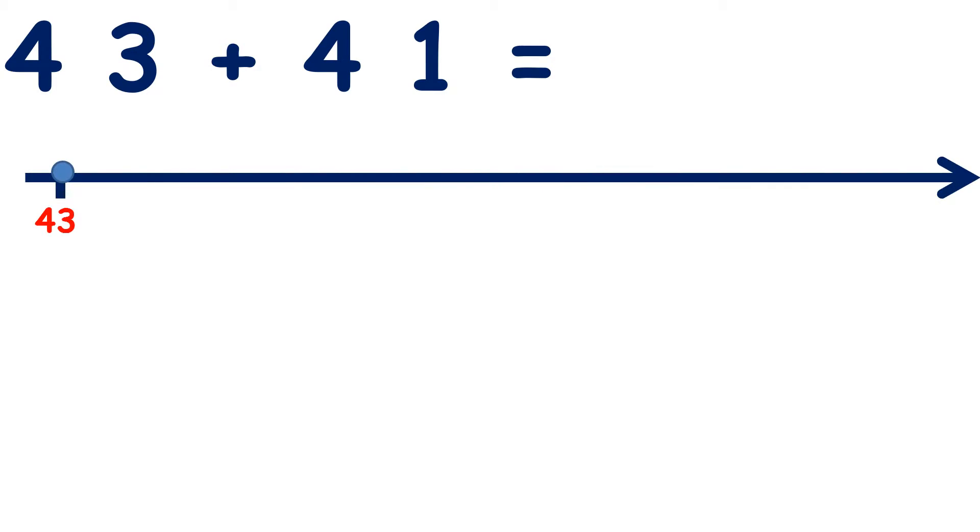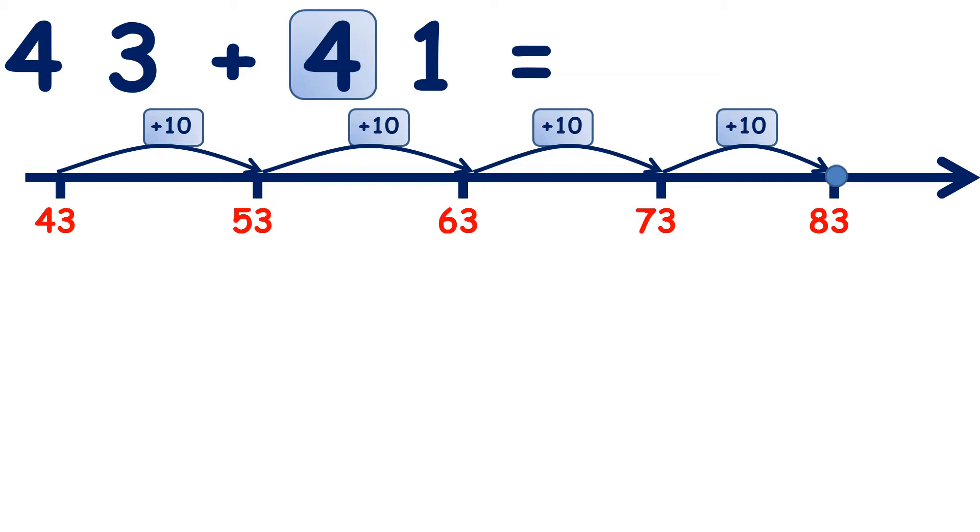We start with 43, add 10 we get 53, another 10 is 63, another 10 is 73, and a fourth 10 we get 83. So we've added 40 because we've added 10 four times, we've added four lots of 10. Now if we add one we get to 84. So we've added our one unit and our answer is 84.